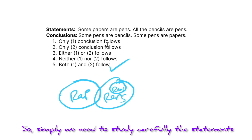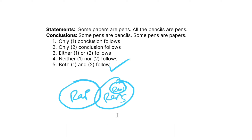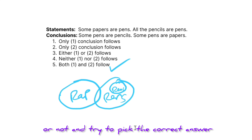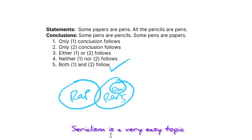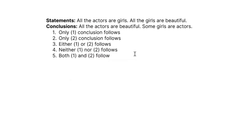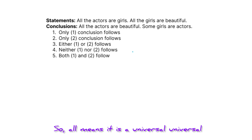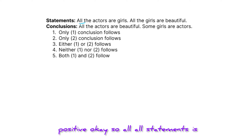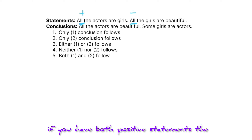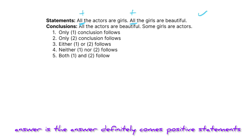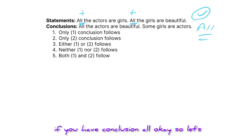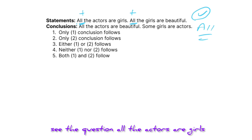We need to study the statements carefully, draw the Venn diagram, and check if the conclusions follow — syllogism is a very easy topic. Remember one simple trick: 'all' means it's a universal positive statement. If you have both positive statements and the conclusion contains 'all', the answer definitely comes as a positive statement. So if you have 'all' in the conclusion, it follows 90% of the time.